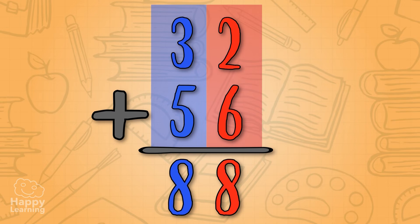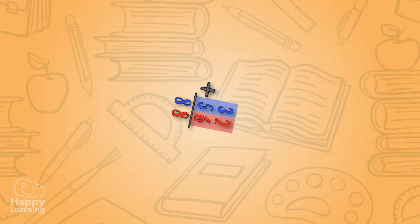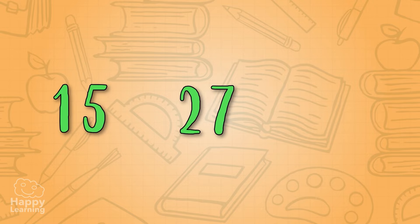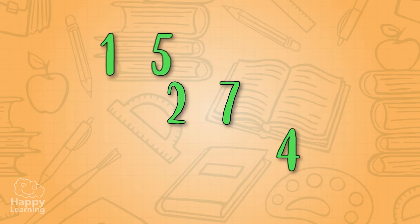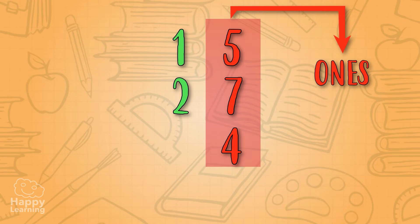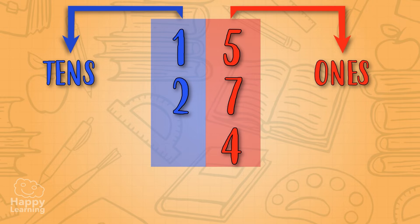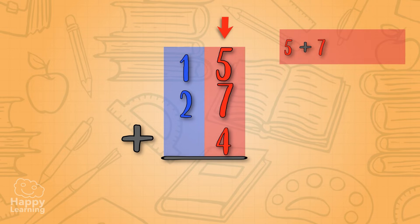But what happens if the addition has remainders and more than two summands? It's easy peasy! Let's add 15 plus 27 plus 4. As we've seen before, we place the summands under each other — ones under ones and tens under tens. It looks like this. Now we add the ones: five plus seven equals twelve, plus four equals sixteen.